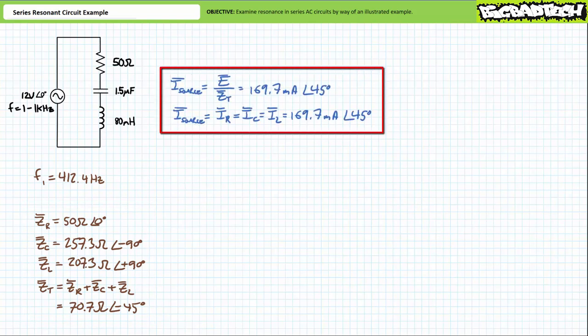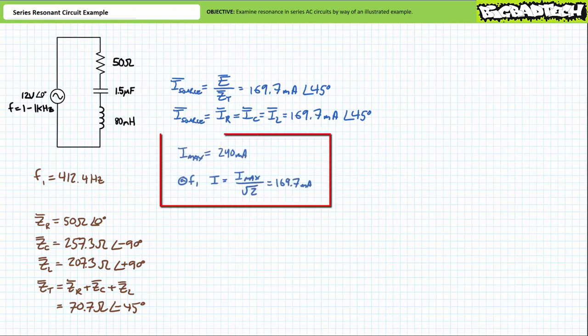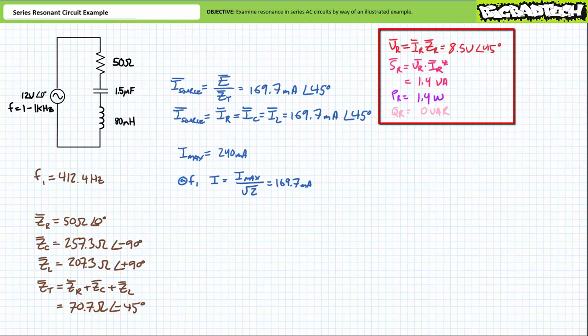An application of AC Ohm's law demonstrates source current will be supply voltage over total impedance. Substituting our given values, we find source current to be approximately 169.7 milliamperes at an angle of positive 45 degrees. A phase shift of positive 45 degrees indicates source current leads supply voltage, as we'd expect for a capacitive circuit. Additionally, the magnitude of source current at the half power frequency is the peak current divided by the square root of two, as we anticipated. An application of Ohm's law demonstrates voltage across the resistor will be approximately 8.5 volts at an angle of 45 degrees. Application of the AC power formula demonstrates the resistor experiences 1.4 volt amperes of apparent power, all directed towards 1.4 watts of real power and none towards a reactive interchange.